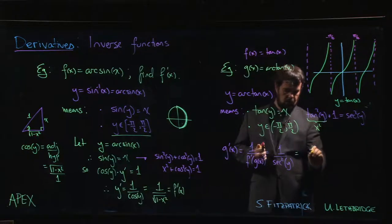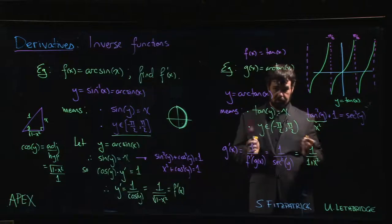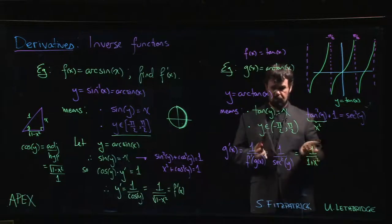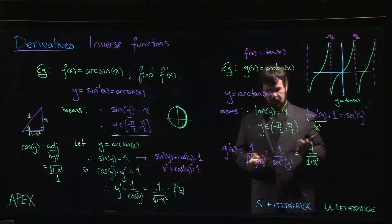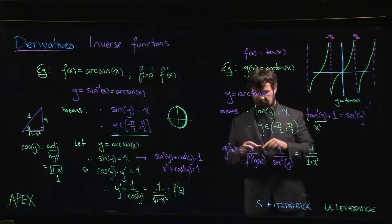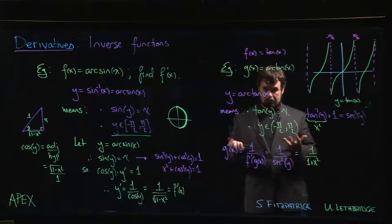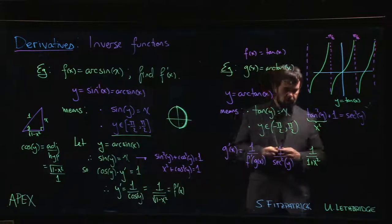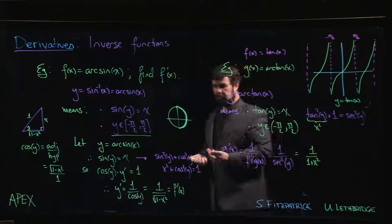Well, that's exactly what we want. 1 over 1 plus x squared. There's our derivative. Again, it's a rational function. It's a little bit surprising that the derivative of an inverse trig function gives you something, in some sense, much simpler. 1 over 1 plus x squared is the derivative of arctan.